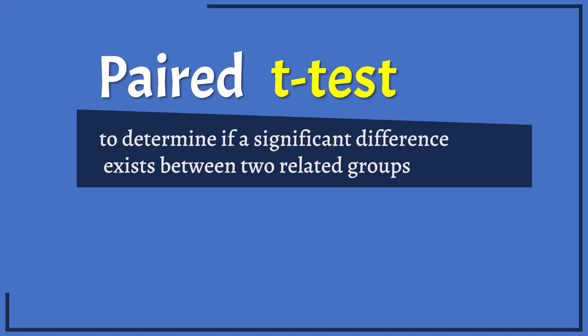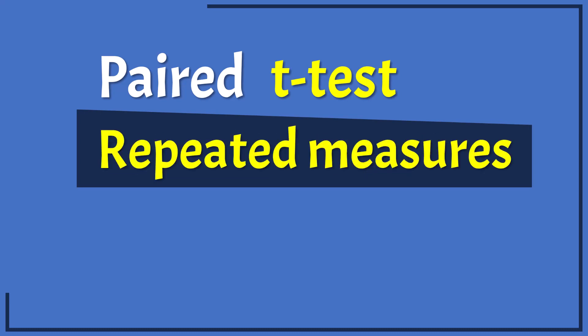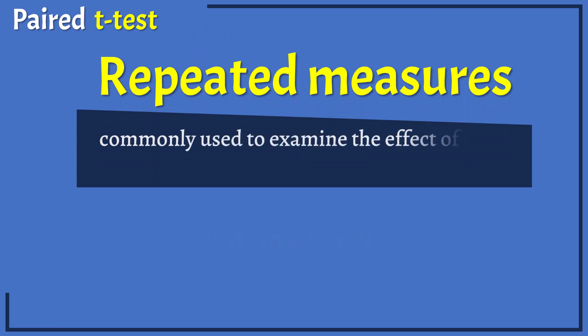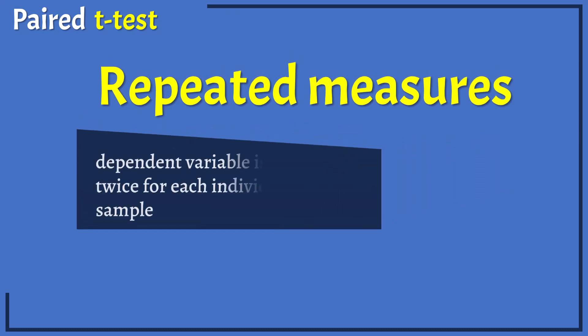The most common paired t-test design is the repeated measures t-test, or what is also called within subjects t-test. The repeated measure t-test is commonly used to examine the effect of a treatment or intervention on the same set of individuals, where measurements are taken twice for every individual in that sample.